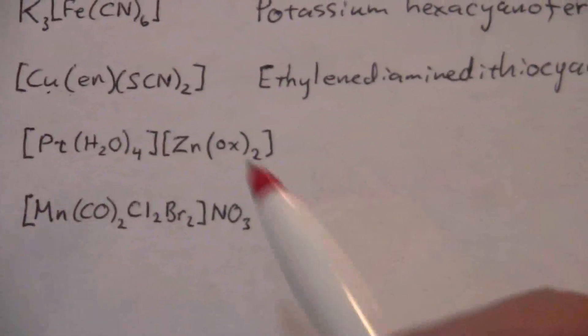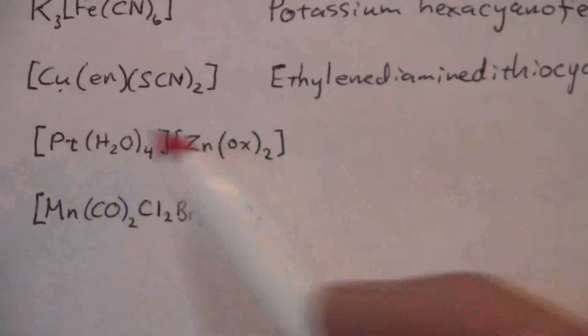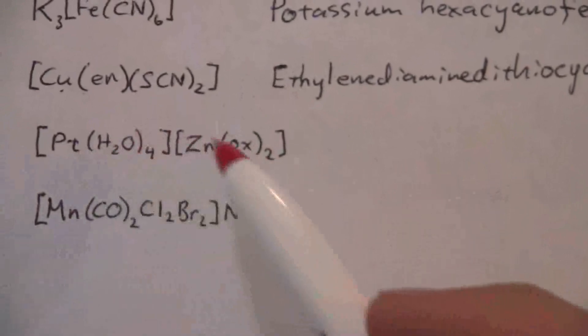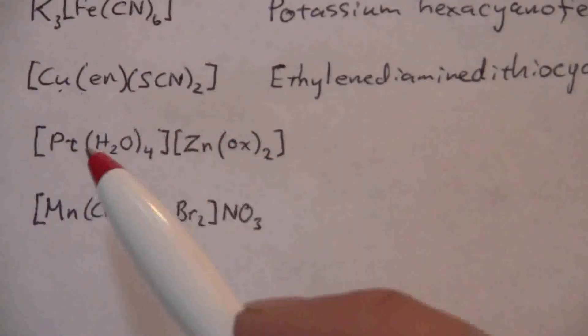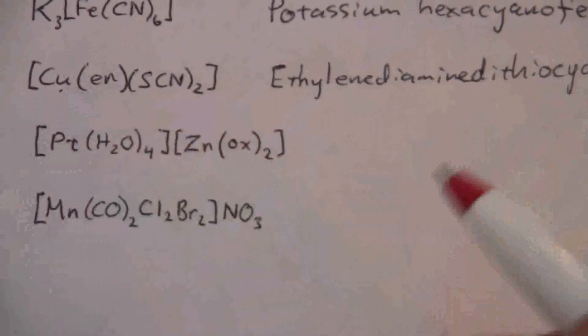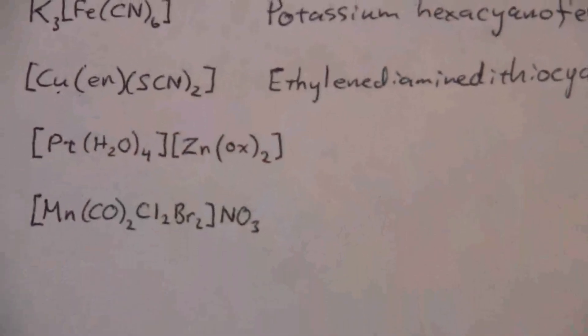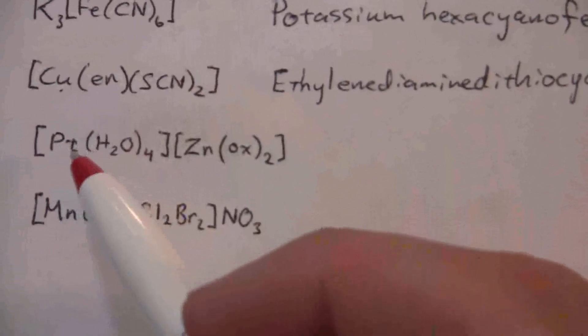Okay, now here we have a compound that has two complex ions. Both the cation and the anion are complex. We name it just the same as we would otherwise.